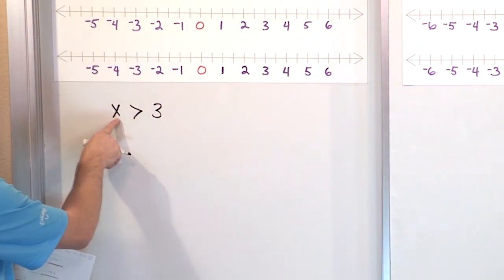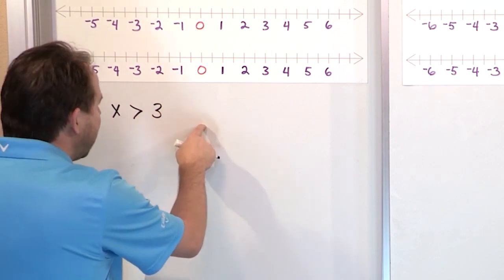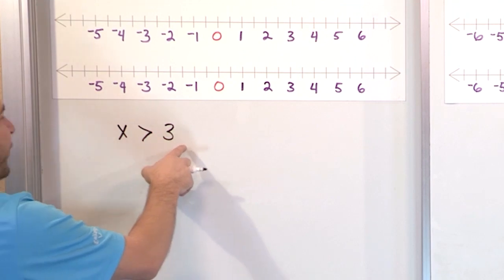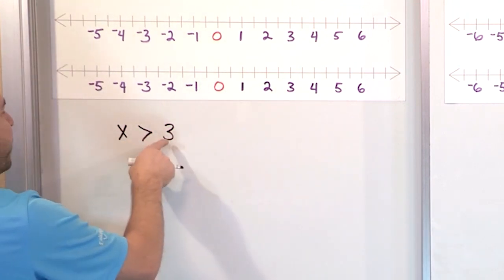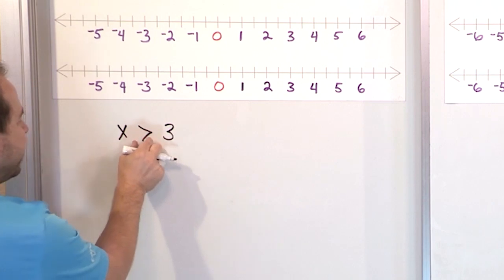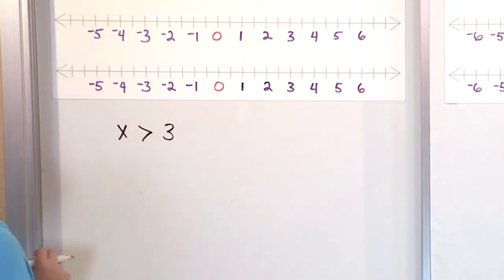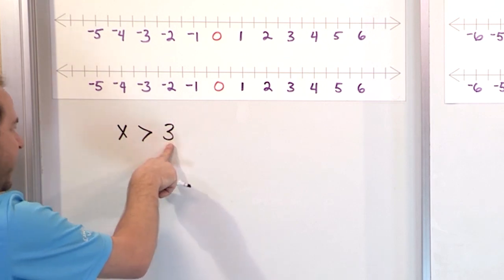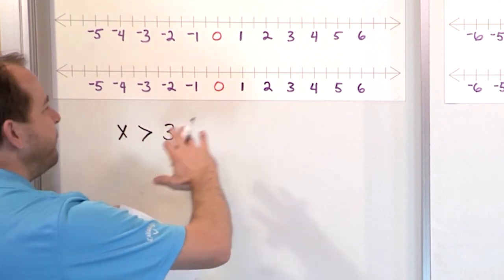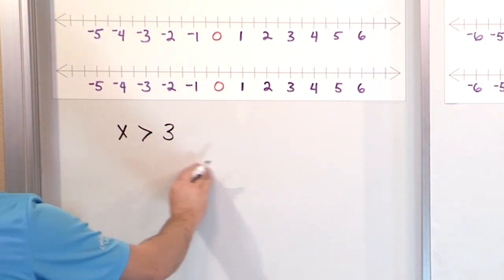Since x is greater than 3, we're saying that x can be 4 or 5 or 6 or 7 or 8, but also the numbers in between — like x can be 4.5, x can be 3.012. As long as it's bigger than 3, notice there's no equal sign. If there's an equal sign under the inequality, then you would have to include 3. Any number bigger than 3, like 3.01, 5.79, and so on — that is what x can be. It's a whole range of values.